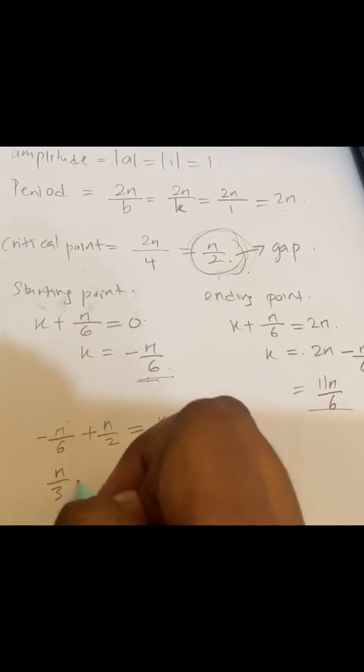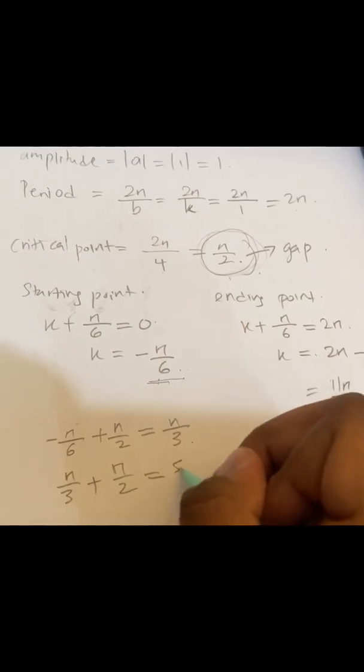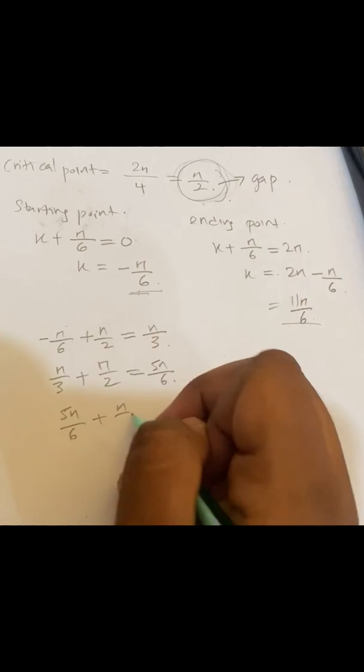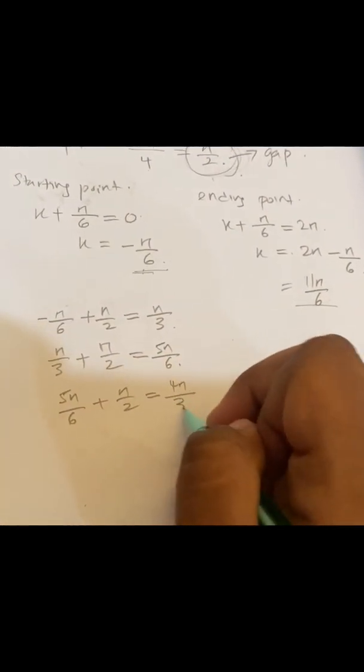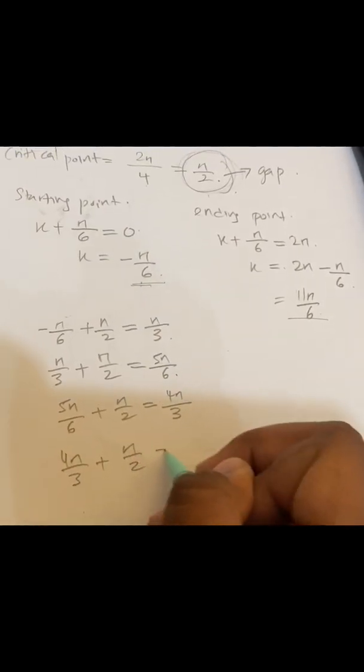π over 3 plus the gap again, then you will get 5π over 6. And same, 5π over 6 plus the gap, you will get 4π over 3. Then 4π over 3 plus gap equals to 11π over 6, which is our ending point.